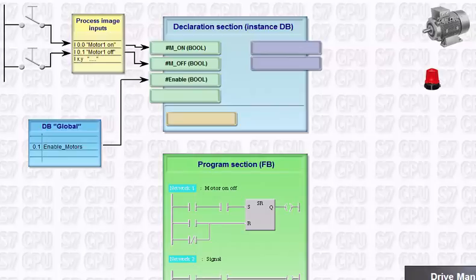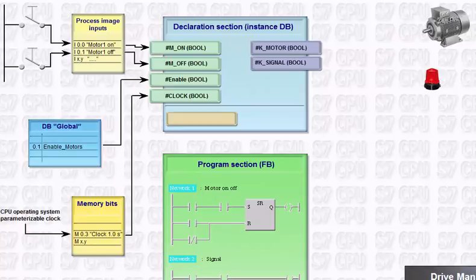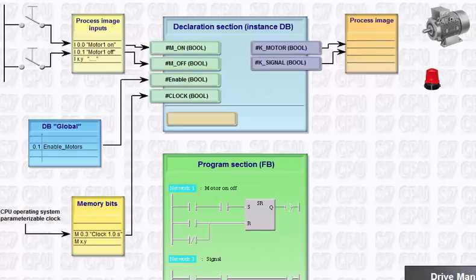The central blinking signal is automatically assigned to a global memory bit via parameterization by the CPU and it is connected to a further input parameter. The controlled motor contactor and the blinking light are connected with the address in the process image of the outputs via the output parameters.